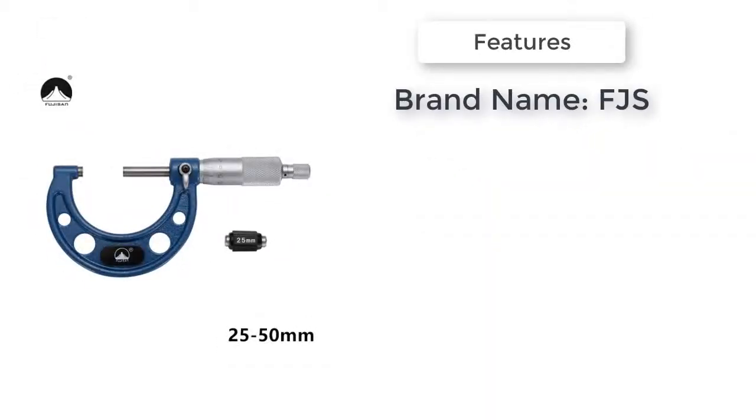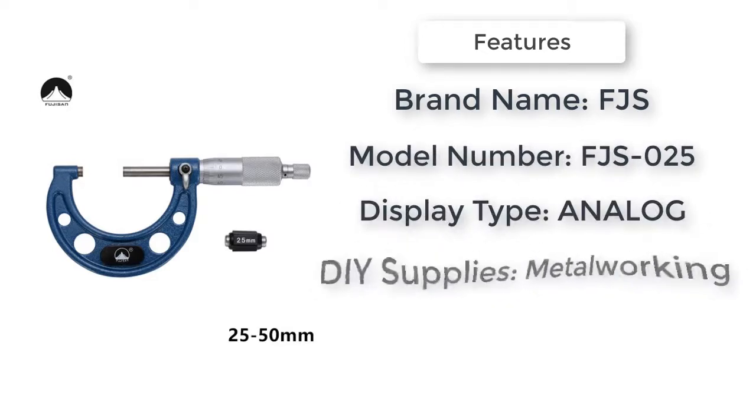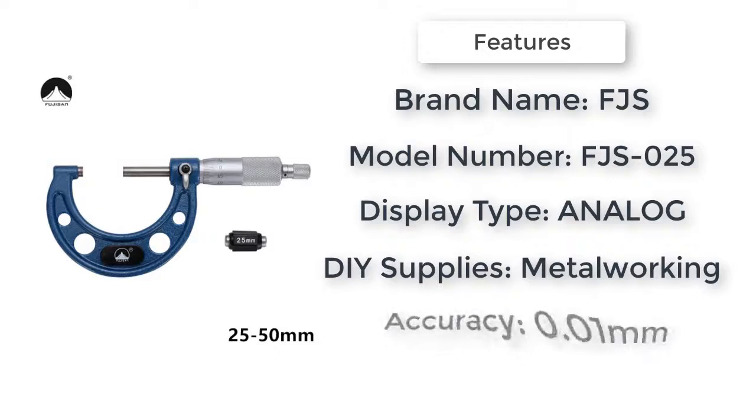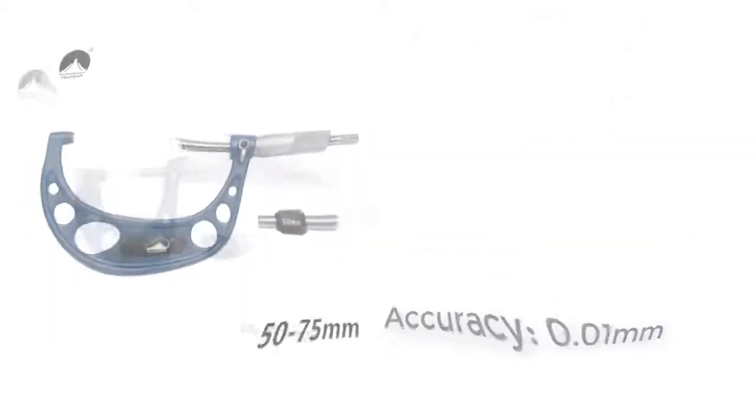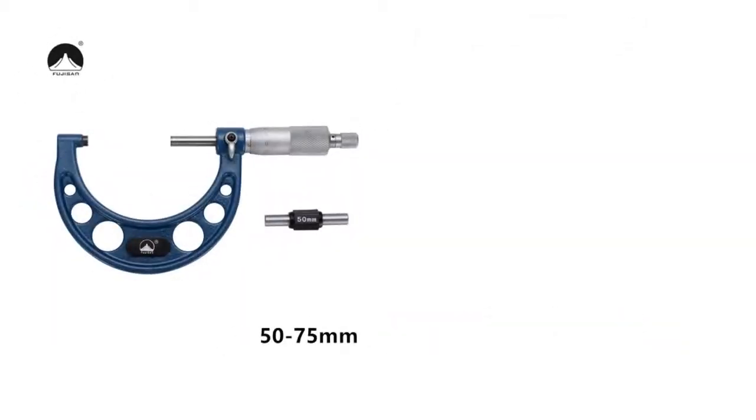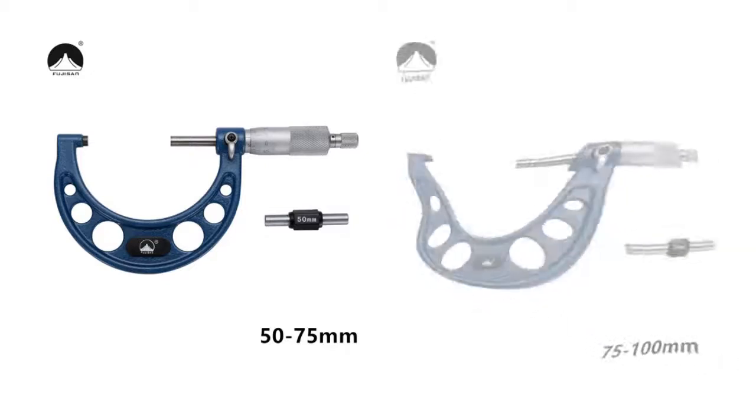Brand name FGS, model number FGS025. Complete with calibration standards and wrenches, ratchet handle for precise application of force, lock nut, powder coated baked finish. Fitted in plastic case, super hard carbide tipped.